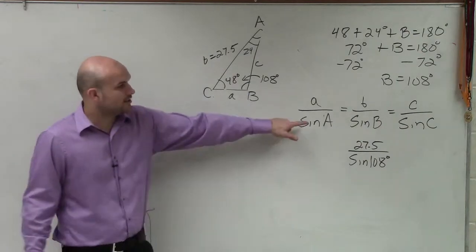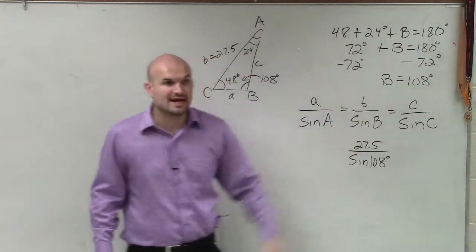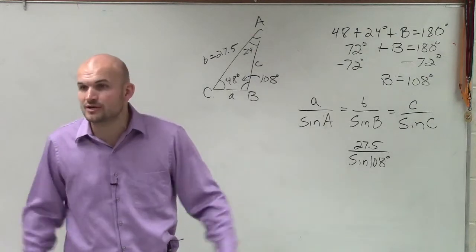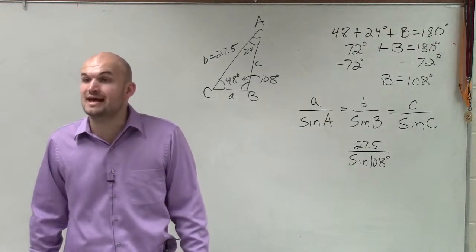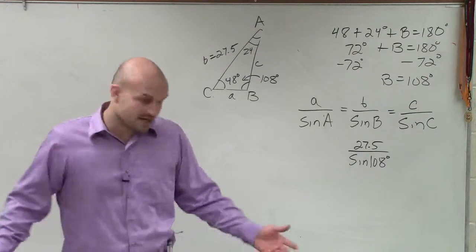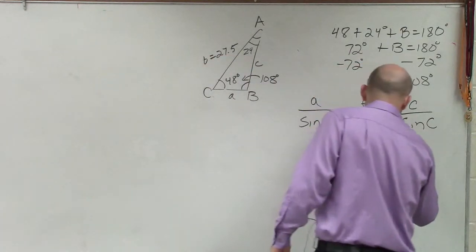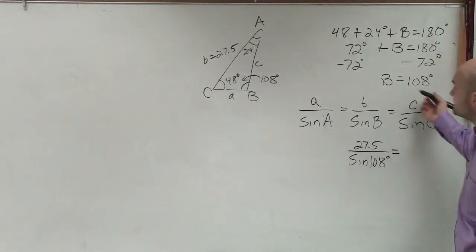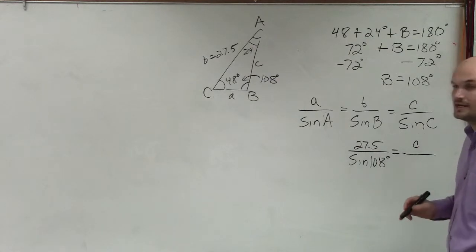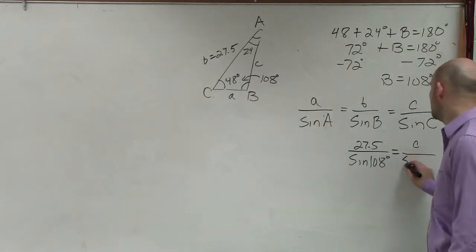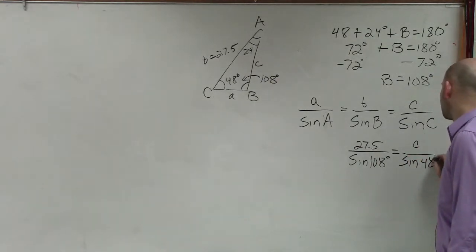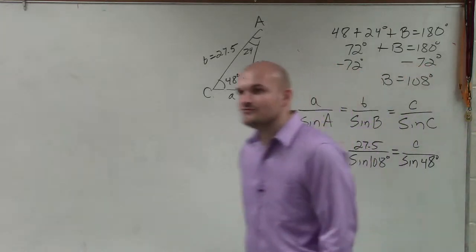Now, we know angle A and angle C, but we need to be able to solve for A and C. So it doesn't matter which one you want to do first. Caroline, what would you like to solve for first, A or C? C. Okay. So then I'll set this equal to C, and then I'll say C. We don't know the length of C, but we do know the sine of the angle C, which would be the sine of 48 degrees.